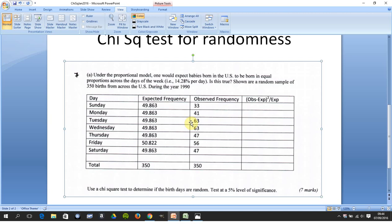YouTube tutorials today we're doing a chi-square test for randomness. This question is taken from the January 2016 paper and this is question 7 part a.